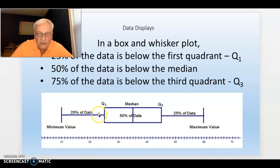From the box and whisker plot, we can see that 25% of the data is in this bottom whisker. And then 50% of the data is from the minimum value all the way up to the median.